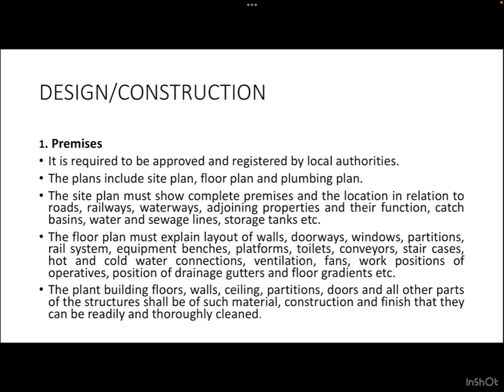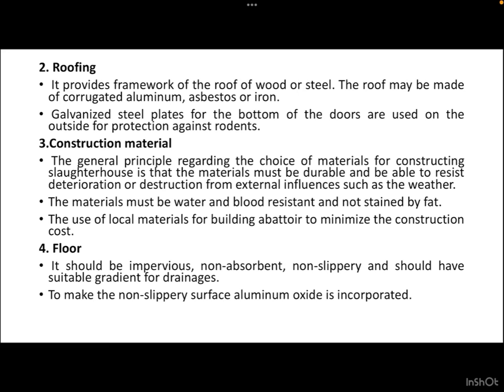All parts of the structure shall be of such material, construction, and finish that they can be readily and thoroughly cleaned. For roofing, the framework may be of wood or steel, and the roof may be made of corrugated aluminum, asbestos, or iron. Galvanized steel plates for the bottom of doors are used on the outside for protection against rodents. The general principle for choice of construction materials is that they must be durable and resist deterioration from external influences such as weather. Materials must be water- and blood-resistant and not stained by fat. Use of local materials to minimize construction cost is promoted.